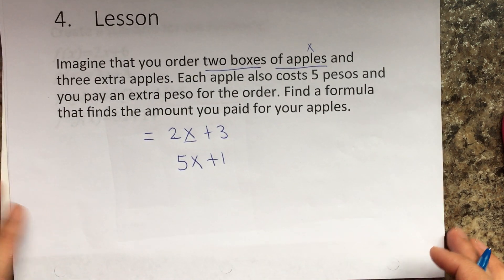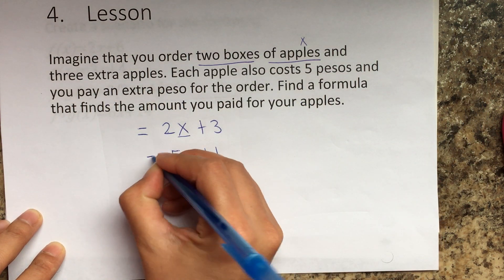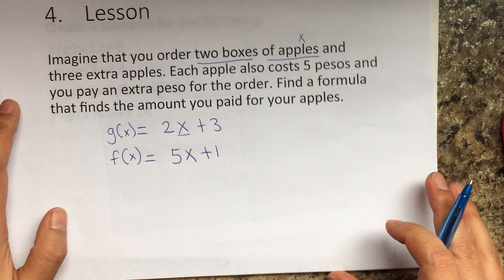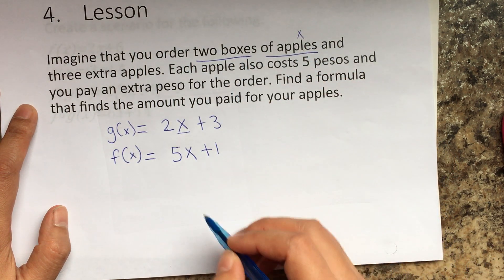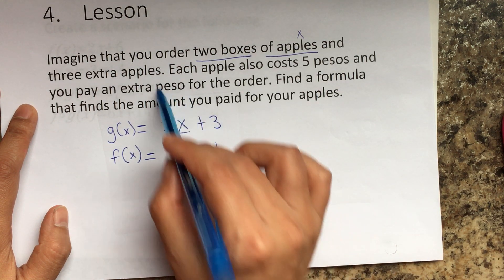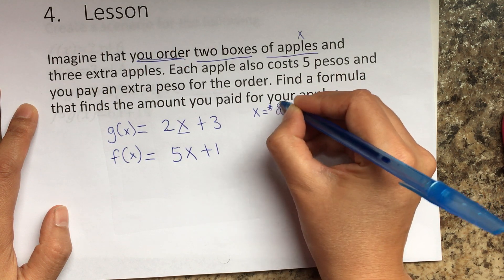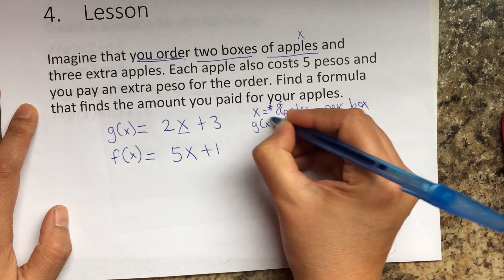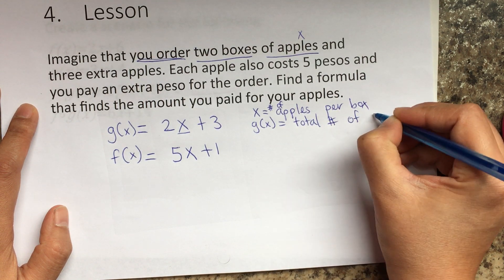Find a formula that defines the amount you pay for your apples. I'm going to call this g(x) and this f(x). The x represents the apples in each box, and these loose apples are all the apples you order. So x equals number of apples per box, and g(x) represents the total number of apples I order.